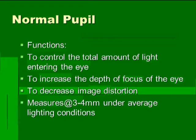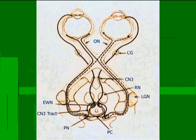The normal pupil functions to control the amount of light entering the eye, gives you depth of focus, and decreases images' distortion. It's generally three to four millimeters in average ambient light conditions.